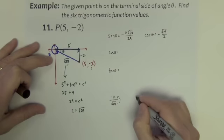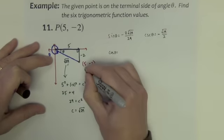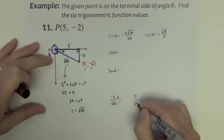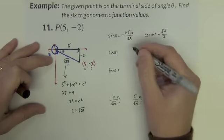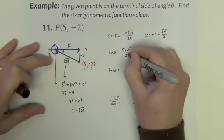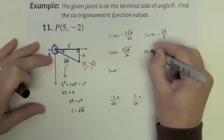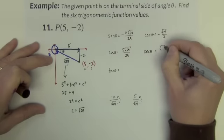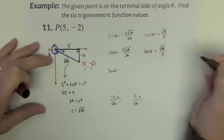Cosine, it's the x value, 5 over the r. Bring up the radical, we get 5 square root of 29 over 29. The secant, while we're at it, is this one reciprocated.